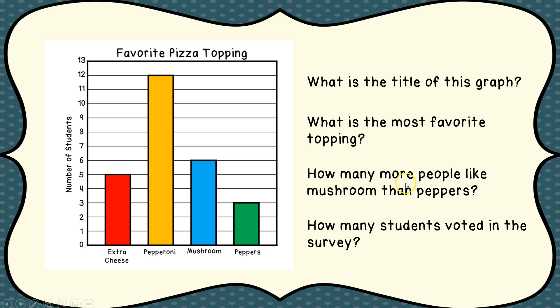How many more people like mushrooms than like peppers? If we look here, six people like mushrooms — Mr. Pearson happened to like mushrooms as well. And only three people voted for peppers. So we're going to take six and subtract three from it. Six minus three means three more people like mushrooms than like peppers.